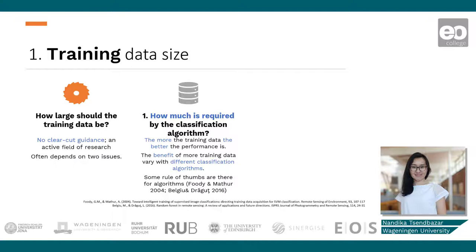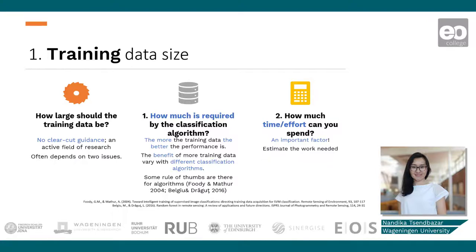The second factor is how much time or effort we can spend on data collection. Data collection is usually manual work, so it can take time. Therefore, it's good to estimate how much time we can spend. For example, we can interpret sample sites for an hour or half hour, and that gives us a good idea of how much time might be required for the data collection.